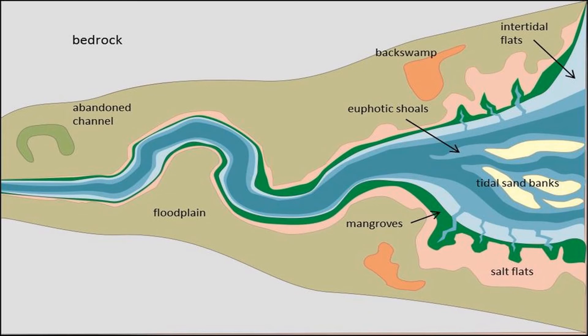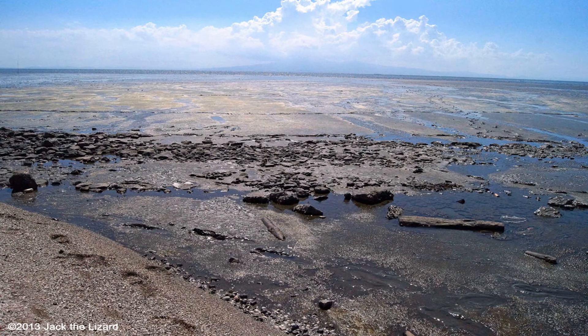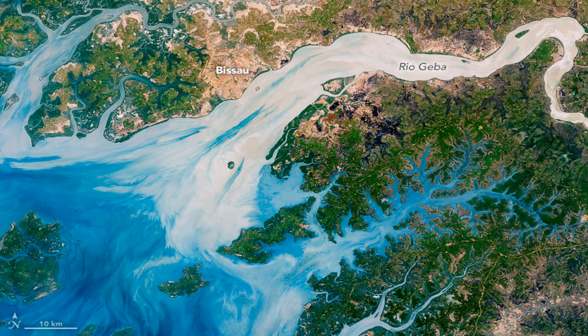Tide-dominated estuaries also tend to cause mudflats. Mudflats are coastal wetlands and intertidal areas formed by sediment brought in by the tide. Tides cause mudflats by depositing mud and silt which mix together to form the sediment of the mudflats. There are many different types of estuaries on Earth: coastal plains, fjords, bar-built, and tectonic estuaries.